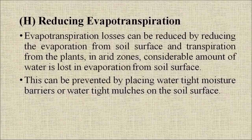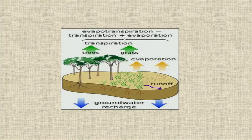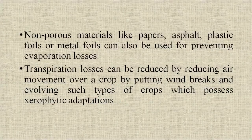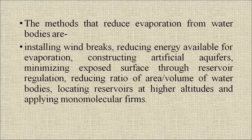Reducing evapotranspiration: evapotranspiration losses can be reduced by reducing evaporation from the soil surface and transpiration from plants. In arid zones, considerable amounts of water are lost to evaporation from the soil surface. This can be prevented by placing watertight mulches or moisture barriers on the soil surface. Non-porous materials like paper, asphalt, plastic foils, or metal foils can also be used. Transpiration losses can be reduced by reducing air movement over a crop by putting wind breaks, and by evolving crops with xerophytic adaptations.